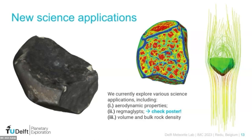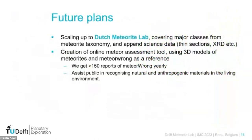There are also interesting future scientific applications. We discussed in the previous lecture the aerodynamics and regmaglypt population — really the analysis of micro-topography of a meteorite's surface — which is quite interesting and we have a poster on that as well. Looking further ahead, the dream is to have the Dutch Meteorite Lab cover the entire meteorite taxonomy, using meteorites from the Naturalis collection but also from Utrecht and other institutes, and to add rich information to make these accessible to the broader community.